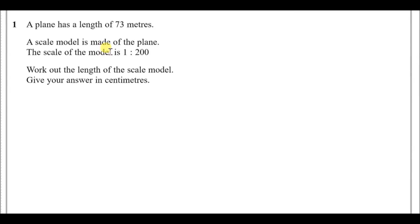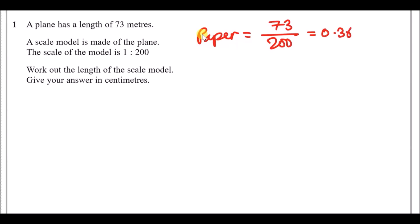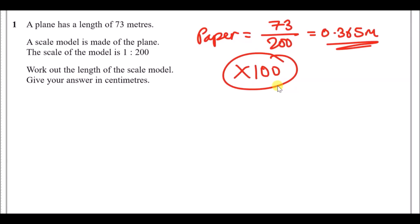Question 1: a plane has a length of 73 meters and the scale of the model is 1 unit to 200 units. To find the model length on paper, divide 73 by 200, which gives 0.365 meters. The question asks for the answer in centimeters, so multiply by 100 — giving 36.5 centimeters.